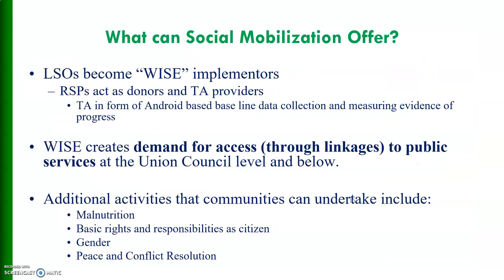What can social mobilization offer? Local Support Organizations become WISE implementers. RSPs act as donor and technical assistance providers. Technical assistance is in the form of Android-based baseline data collection and measuring evidence of progress. WISE creates demand for access through linkages to public services at the Union Council level and below. Additional activities that communities can undertake include malnutrition reduction, basic rights and responsibilities as citizens, gender equality empowerment, and peace and conflict resolution.